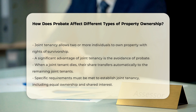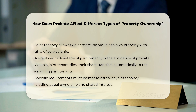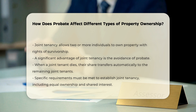Tenancy in common is another form of joint ownership where multiple parties share the property, but there are no rights of survivorship. When a tenant in common dies, their share of the property does not automatically pass to the other owners. Instead, it becomes part of the deceased's estate and must go through probate. This means that the share will be distributed according to the deceased's will or state laws, and it may involve legal intervention.